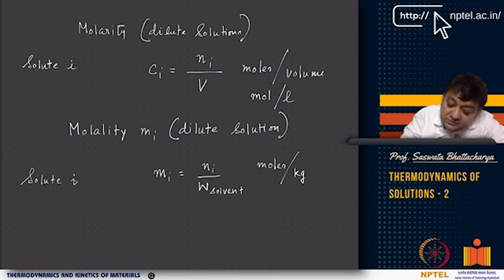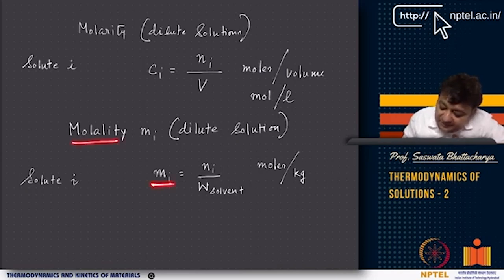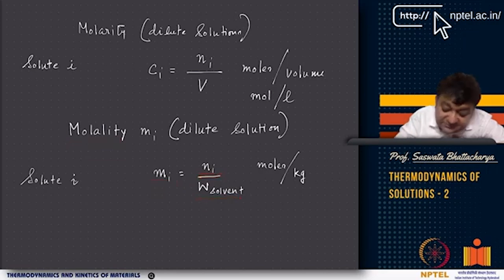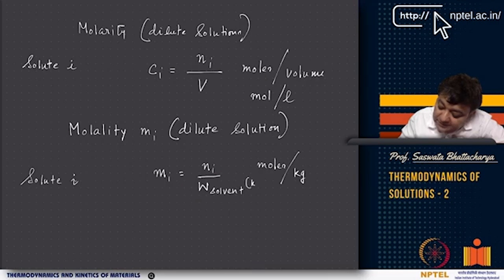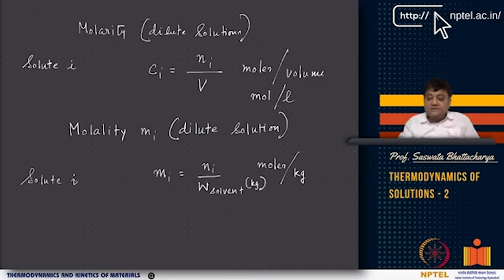For dilute solutions we also use molality, defined as mi = ni / (weight of solvent in kg). The weight of solvent is expressed in kilograms.